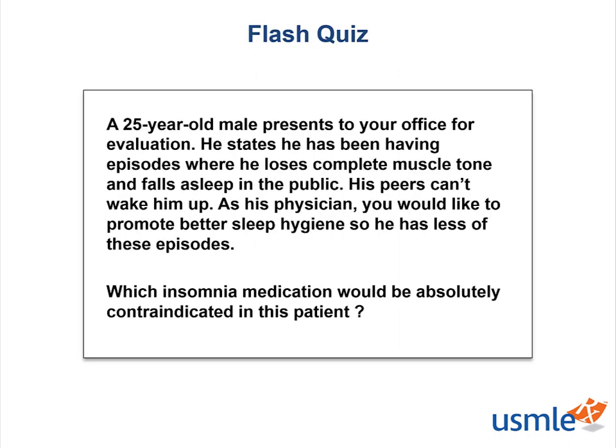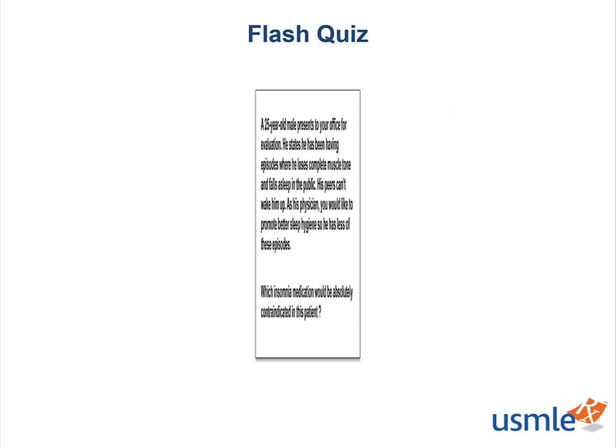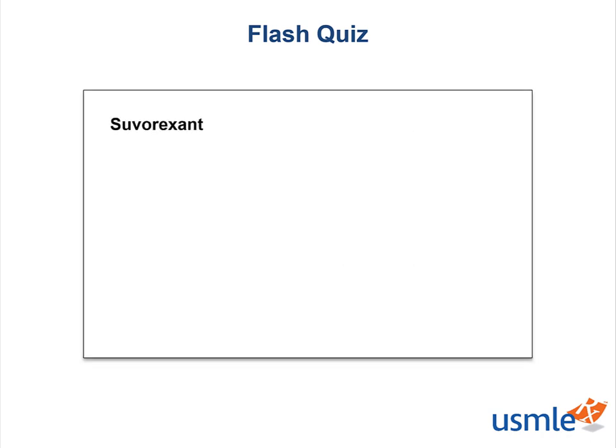Let's do a quick quiz. A 25-year-old male presents for evaluation. He states he's been having episodes where he loses complete muscle tone and falls asleep in public, and his peers cannot wake him up. As his physician, you want to promote better sleep hygiene to lessen these episodes and are reviewing the medication options. Which insomnia medication would be absolutely contraindicated in this patient? If you said suvorexant — an orexin blocker — because these narcoleptic patients already have low orexin and you don't want to block it further, you are correct.